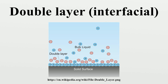The first layer comprises ions absorbed onto the object due to chemical interactions. The second layer is composed of ions attracted to the surface charge via the coulomb force, electrically screening the first layer. This second layer is loosely associated with the object. It is made of free ions that move in the fluid under the influence of electric attraction and thermal motion rather than being firmly anchored.